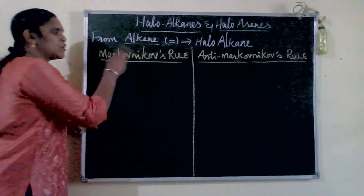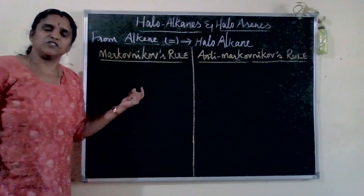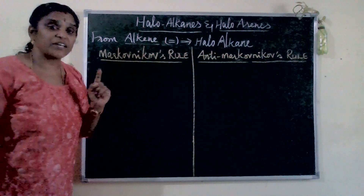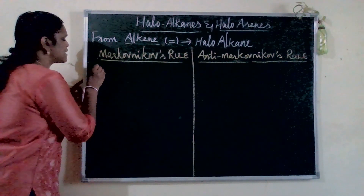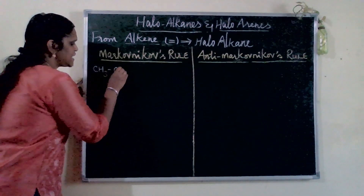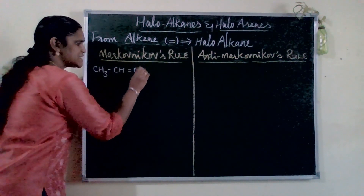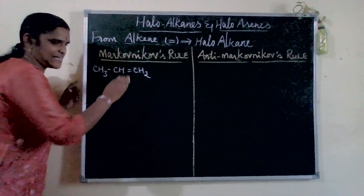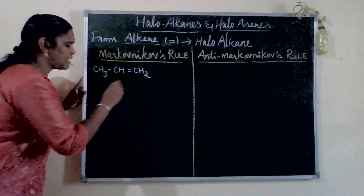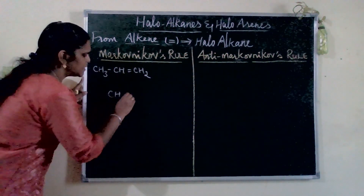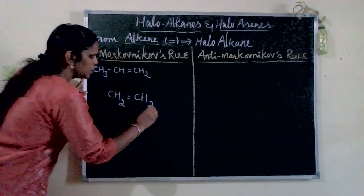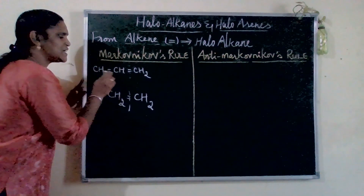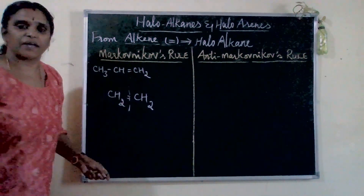Markovnikov's rule — we take the formula for alkene, specifically unsymmetrical alkene. The formula for unsymmetrical alkene is CH3-CH=CH2. Symmetrical means both sides are equal, for example CH2=CH2 — if you cut it, both sides are the same. But here one side is CH2 and the other is CH3-CH, so this is unsymmetrical.